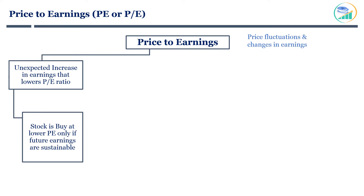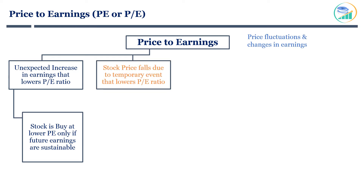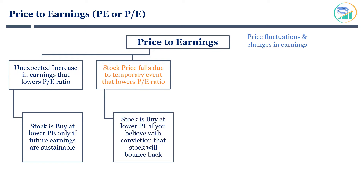The next consideration is changes in stock price. When a stock price falls due to a temporary event, that lowers the P/E ratio — this is the best situation that can happen and investors should take advantage of it. Every company goes through ups and downs. If there is an event in the industry or company that drops the stock price considerably, you should thoroughly investigate the impact on its future earnings. A stock is a buy at lower P/E if you believe with conviction that the event is temporary and the stock will bounce back.